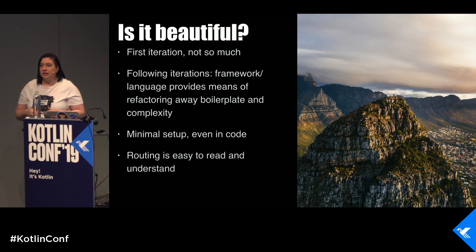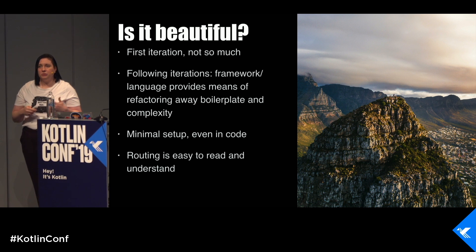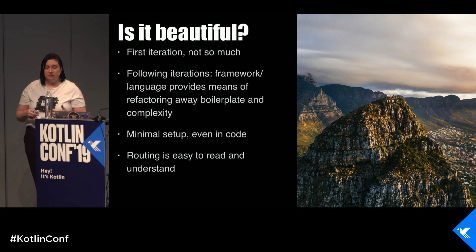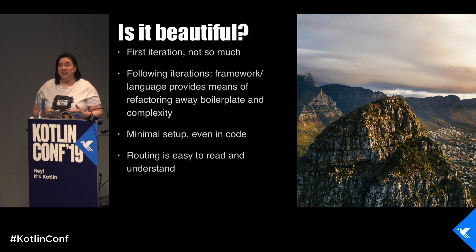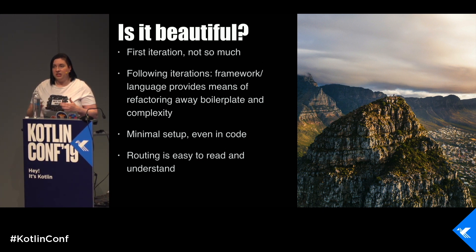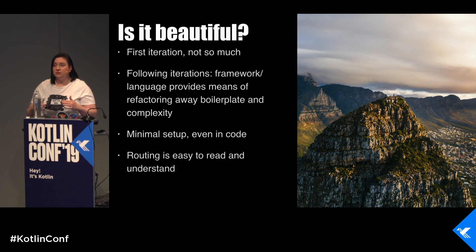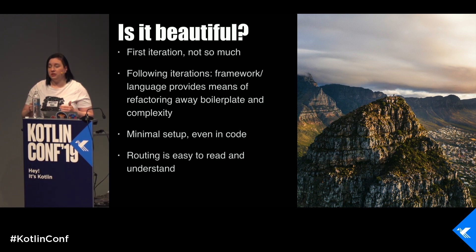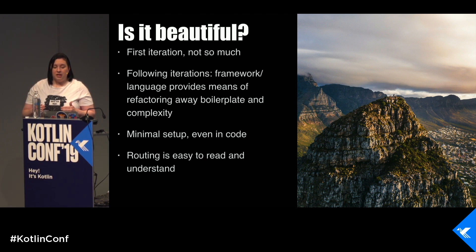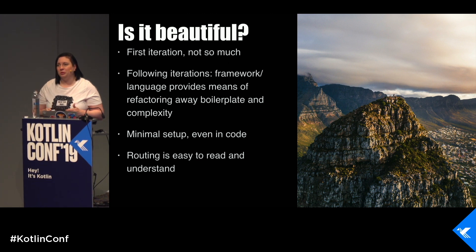In the beginning of my talk I was talking about beautiful code, so let's think about what we just saw with the Ktor DSL. In the first iteration, maybe not so much — but in the following iterations, the framework and the language helped us refactor to get rid of boilerplate and manage complexity. It didn't require a lot of setup code — it literally was just a small application file. Routing was really easy to read and understand. I think this DSL was probably quite beautiful.